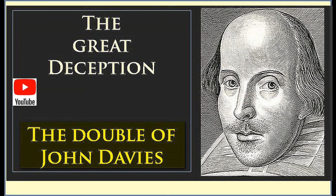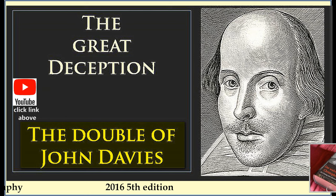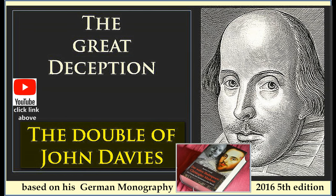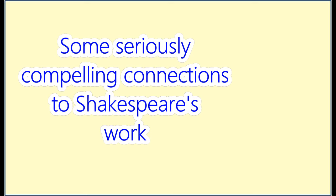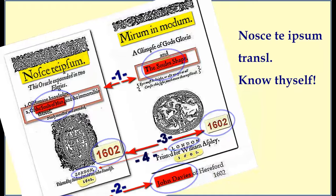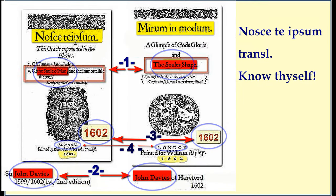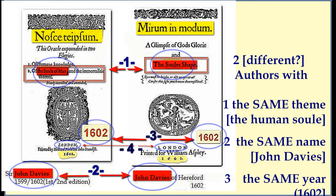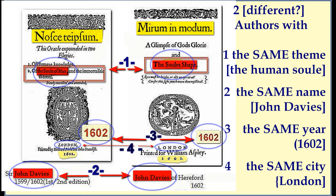There are some really intriguing clues hidden in the works of this mysterious John Davis. It's like a literary detective story. The video doesn't just speculate — it analyzes poems and short witty sayings called epigrams, all attributed to this John Davis. There are some seriously compelling connections to Shakespeare's work. The video starts with a poem called Nosce Teipsum, which translates to 'know thyself.' This poem was a big deal back then, praised for its deep philosophical ideas. It grapples with questions about the nature of knowledge, the human soul, and our place in the universe — big stuff. Those are questions that Shakespeare explored in a lot of his plays.